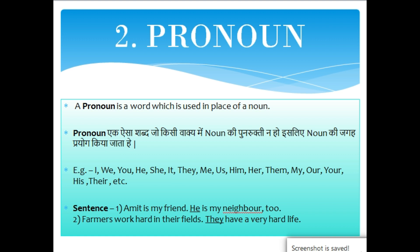Sentence में इन pronouns का प्रयोग कैसे किया जाता है यह हम एक sentence के द्वारा जानने की कोशिश करेंगे. Amit is my friend. He is my neighbor too. पहले वाक्य में Amit एक नाम है, लेकिन दूसरे वाक्य में फिर से नाम लिखने की जरूरत नहीं. उसकी जगह पे हम pronoun का इस्तमाल करते हैं. Farmers work hard in their fields. They have a very hard life. Farmers के लिए यहाँ पे 'they' शब्द का इस्तेमाल किया गया है, जो की एक pronoun है.